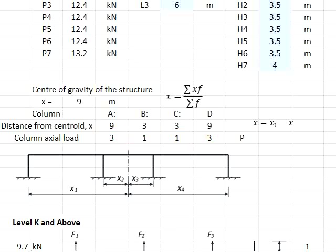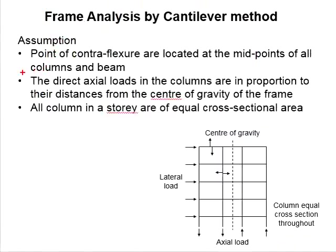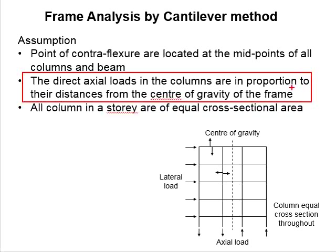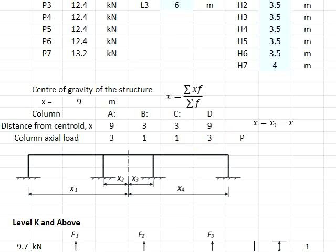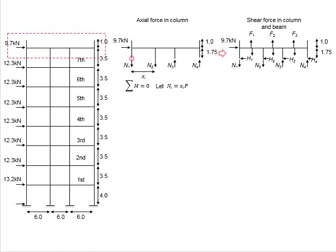At the current stage, we do not know the axial force in the columns. Assume the axial force in the column equals P. Because of the second assumption of proportional distance with axial load, the axial load in column A is estimated to be 3P. The same applies to column D, as their positions are further away from the center of gravity. For columns B and C, it is assumed to be 1P. Next, we analyze the structure level by level, starting with the top level. The free body diagram should look something like this.